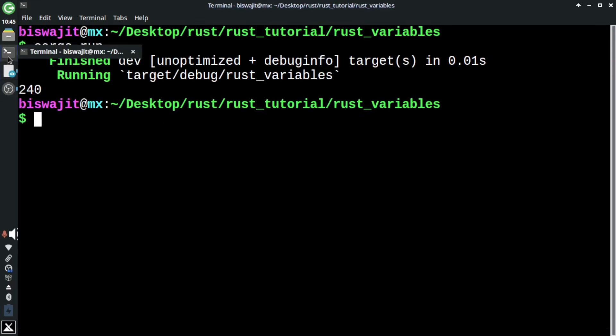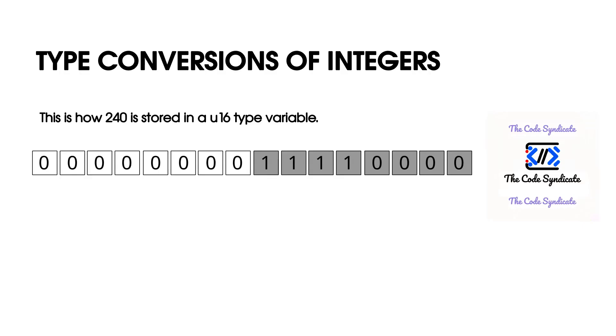The only difference is this 240 is a u8 type rather than the u16 type which we initially declared. What is happening behind the scene is this is how 240 is stored in a u16 type variable.